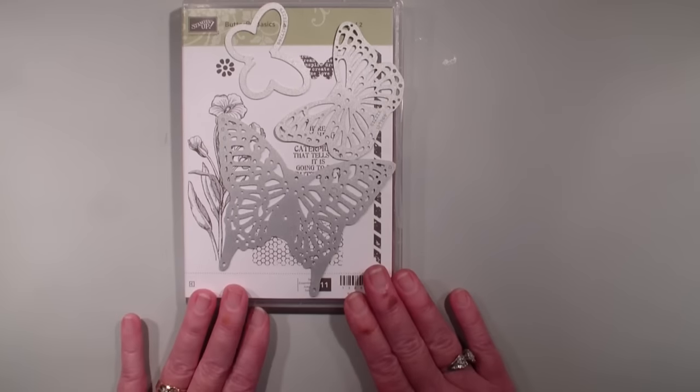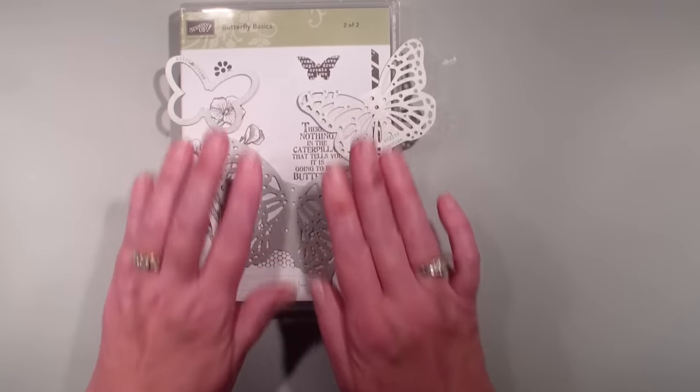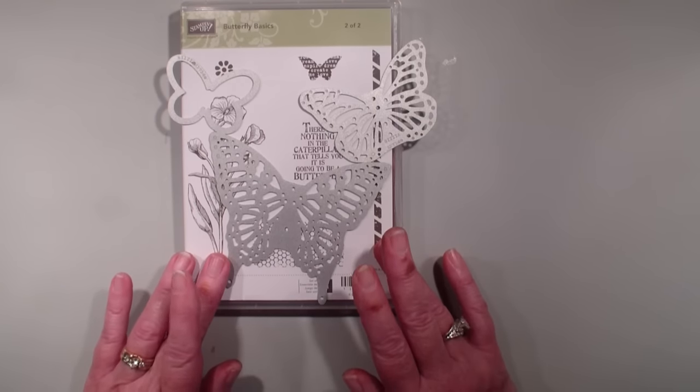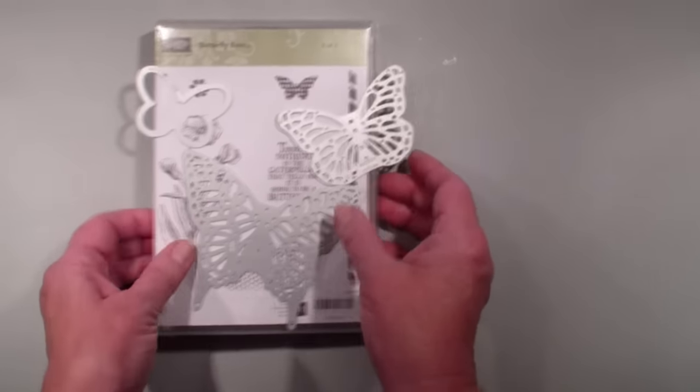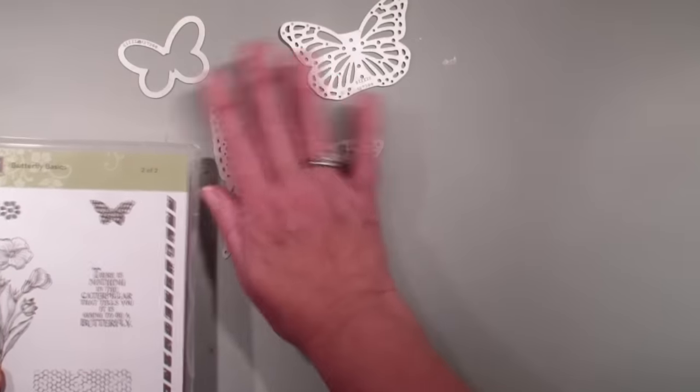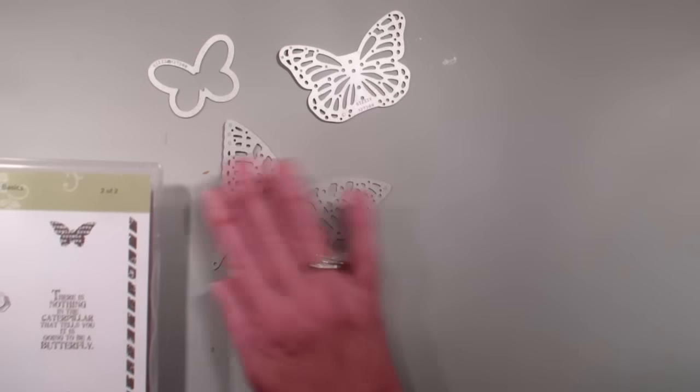First off, let's talk about the butterfly set. In the Occasions catalog, Stampin' Up introduced the beautiful butterfly basic stamp set that had three framelits. This stamp set comes in all three clear photopolymer and wood and with the three framelits.